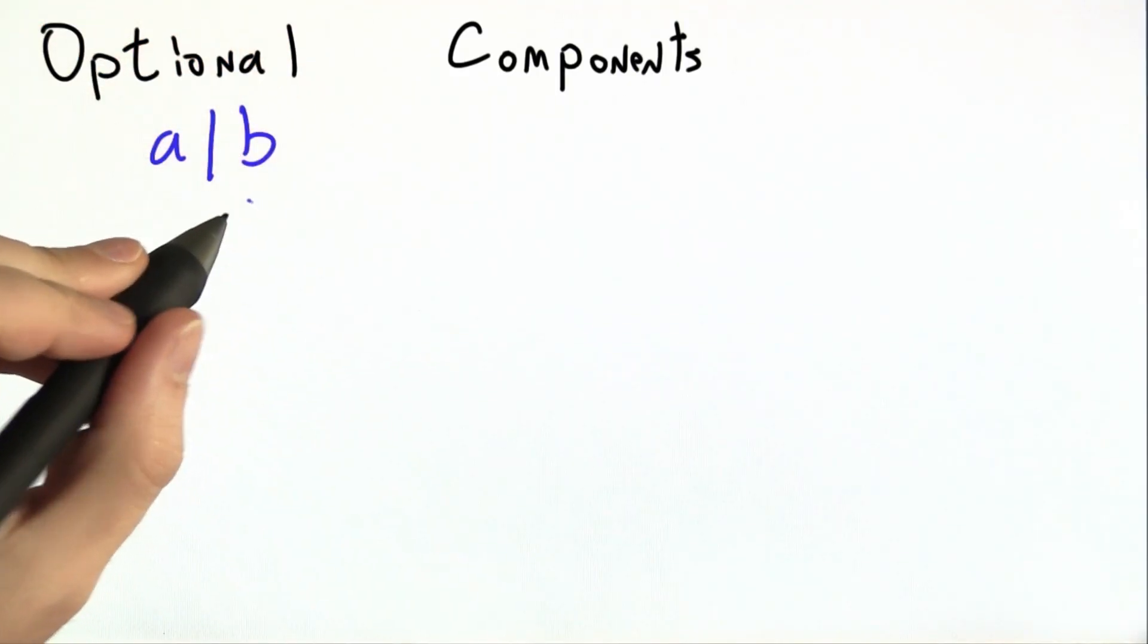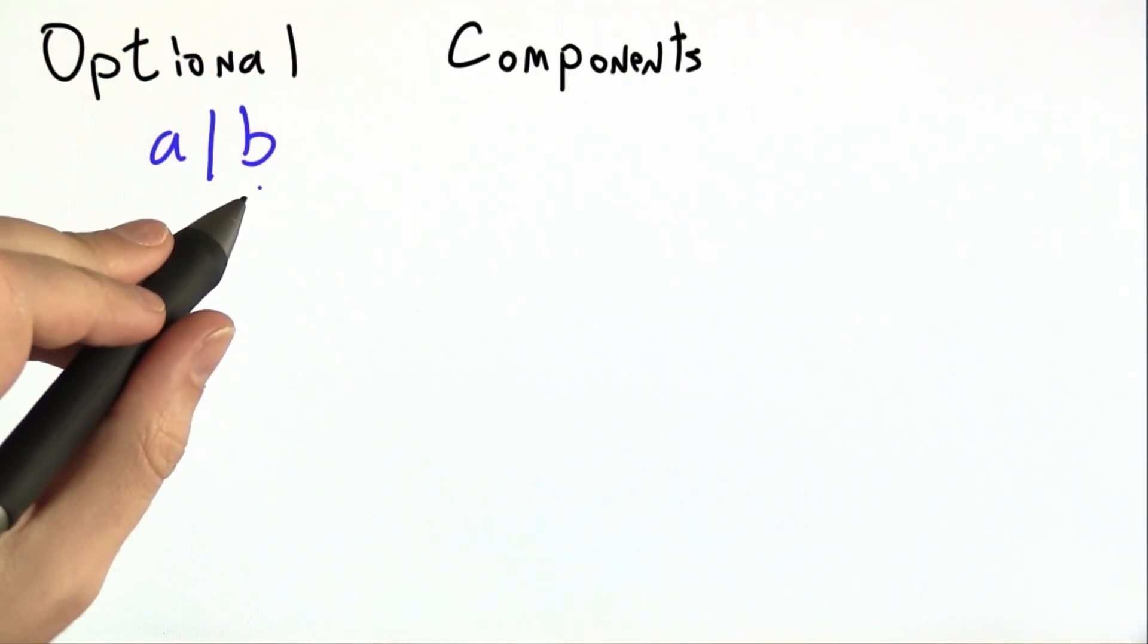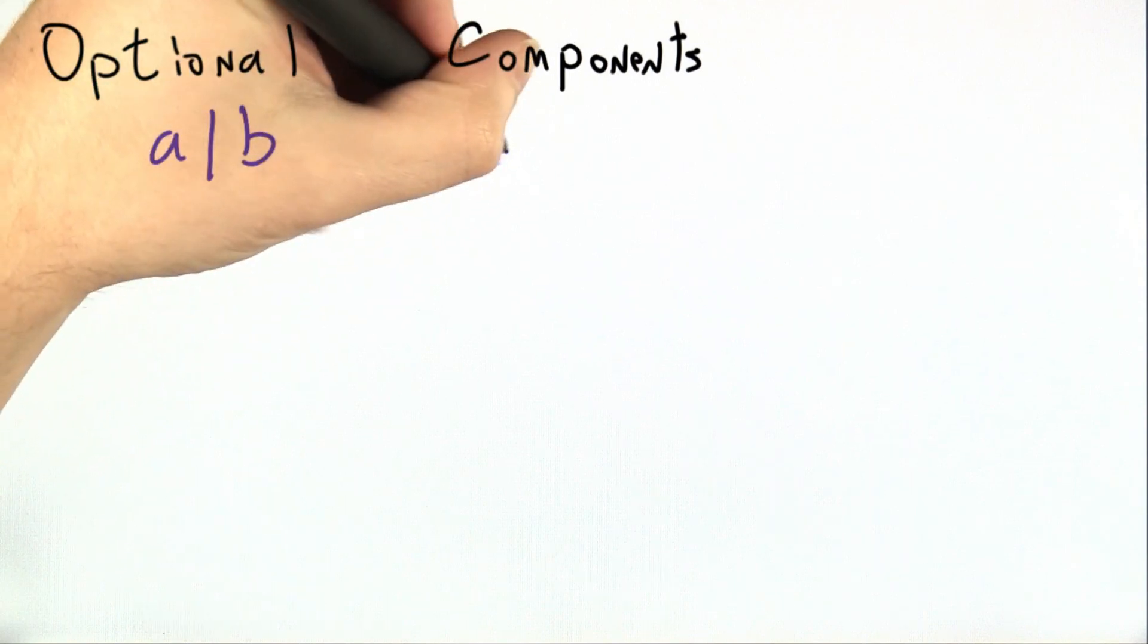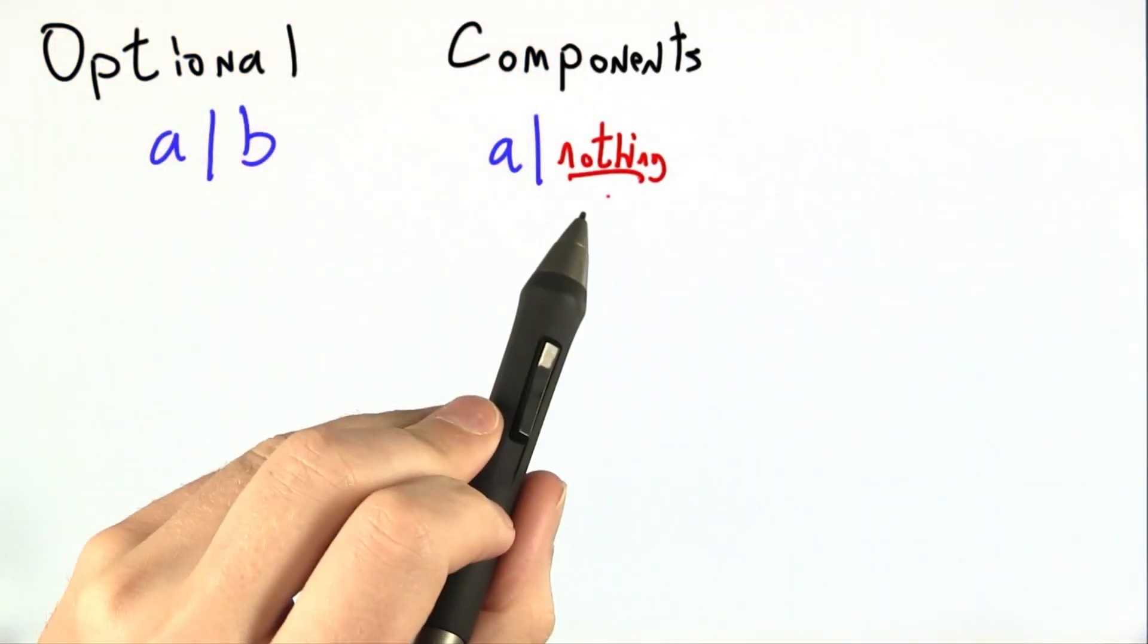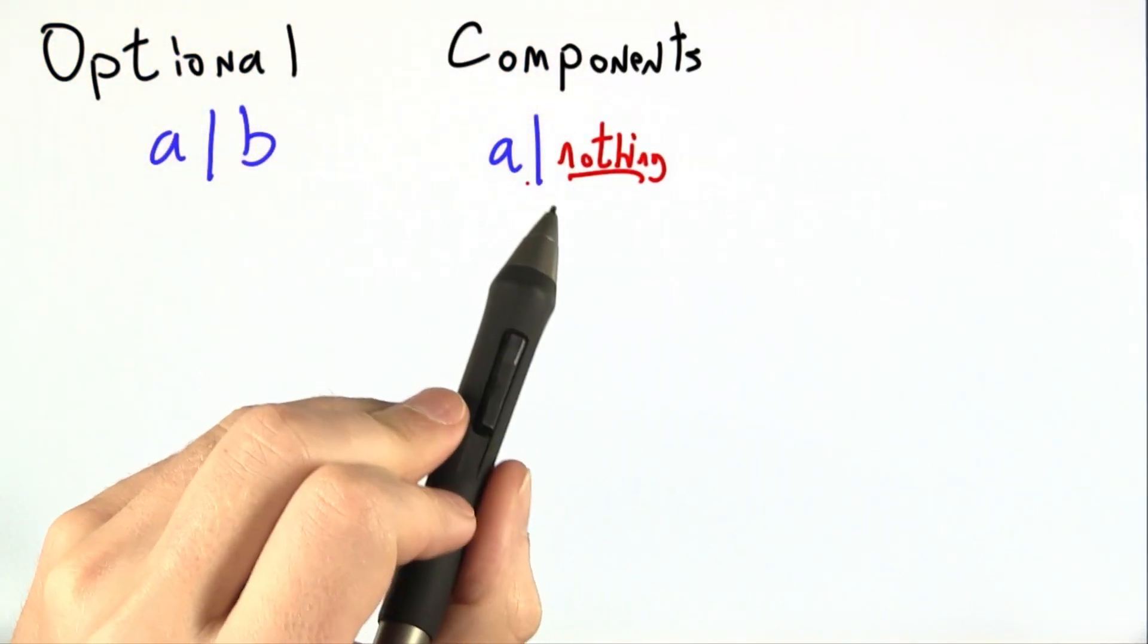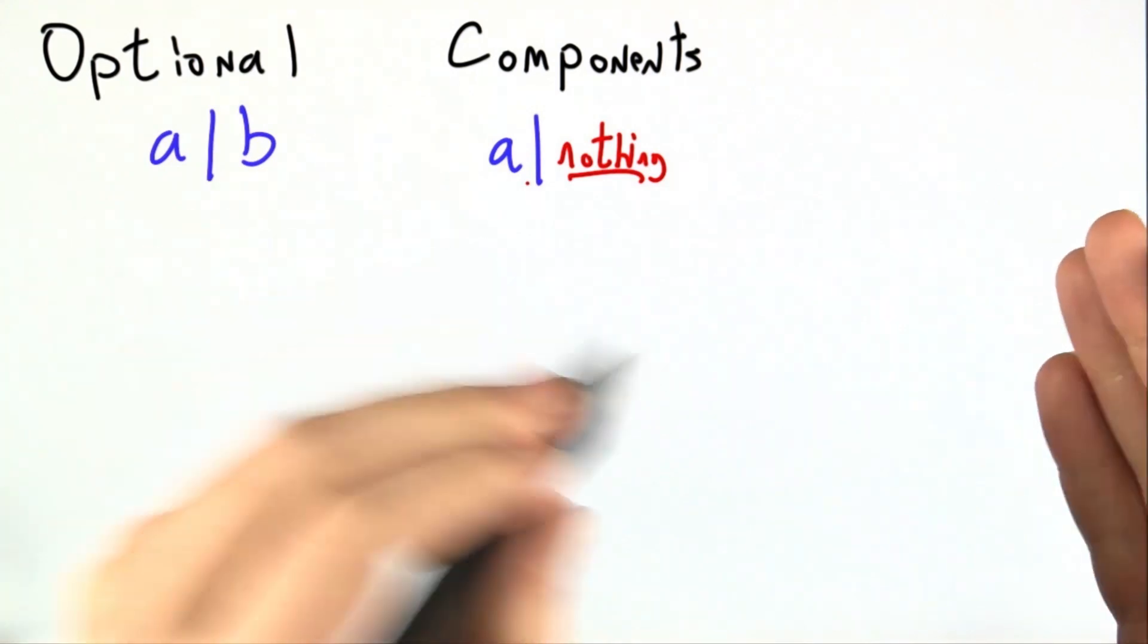So now we have a way with regular expressions to choose either a or b. Another very common choice is to choose between a or nothing. That is to have a part of a string that's optional.